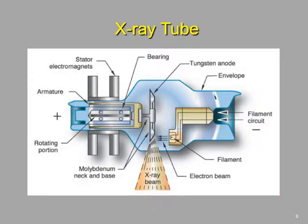Here is the illustration of the x-ray tube that I used on your test. We will be coming back to this illustration, but as a general overview I'll just walk you through these different parts. I think I'll start here with the anode.